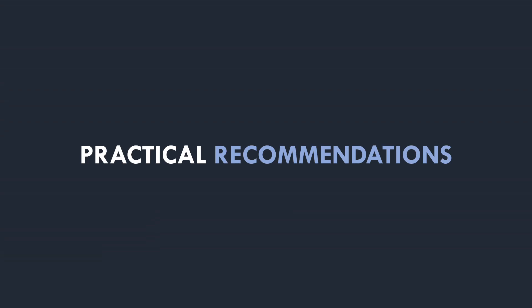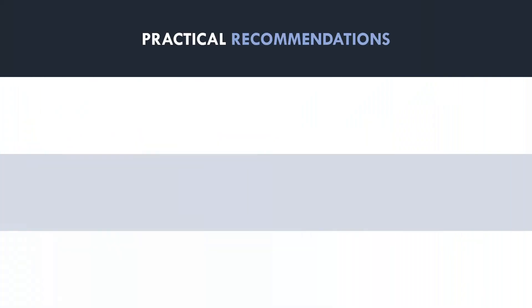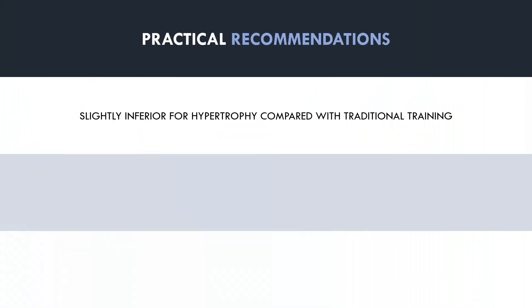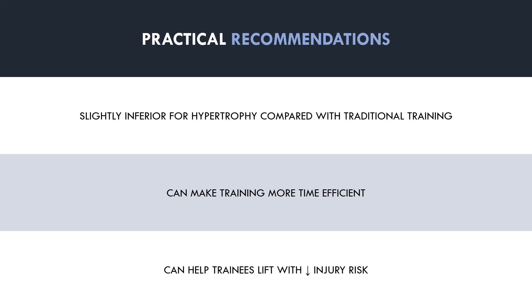To summarise: metabolite style training involves short rest periods and light loads, and is probably slightly inferior to traditional hypertrophy training on a per set basis, though not by much. It is much more time efficient and less stressful on the joints due to lighter loads. It is not a mandatory strategy, but can be useful for accumulating more volume for a specific muscle group, making training more time efficient, or alleviating joint and connective tissue pain. If implemented, it is best used on isolation lifts towards the end of a training session.